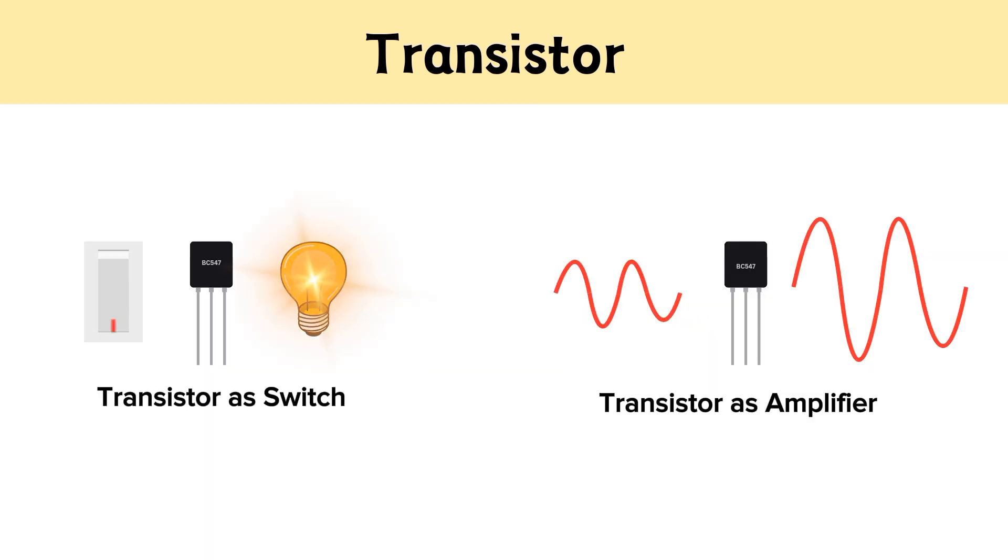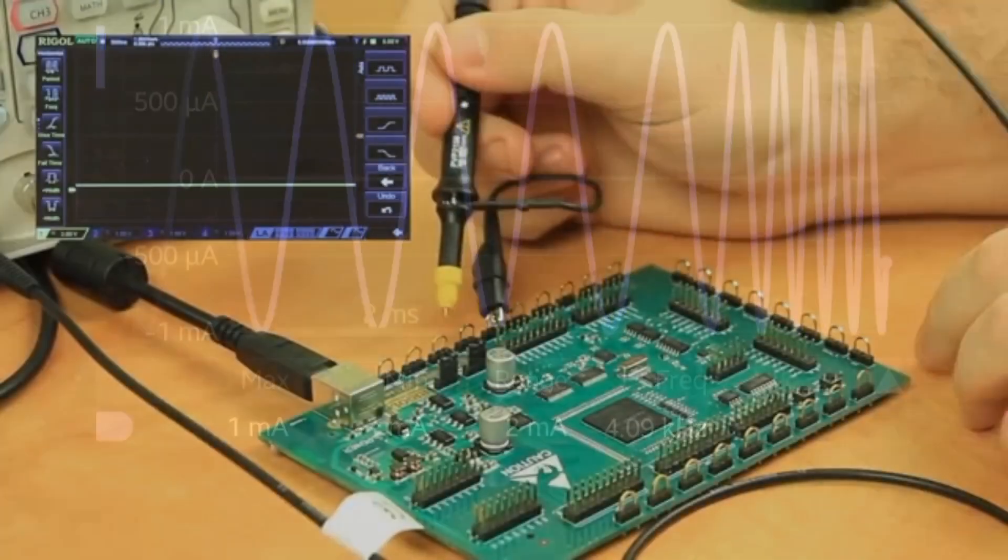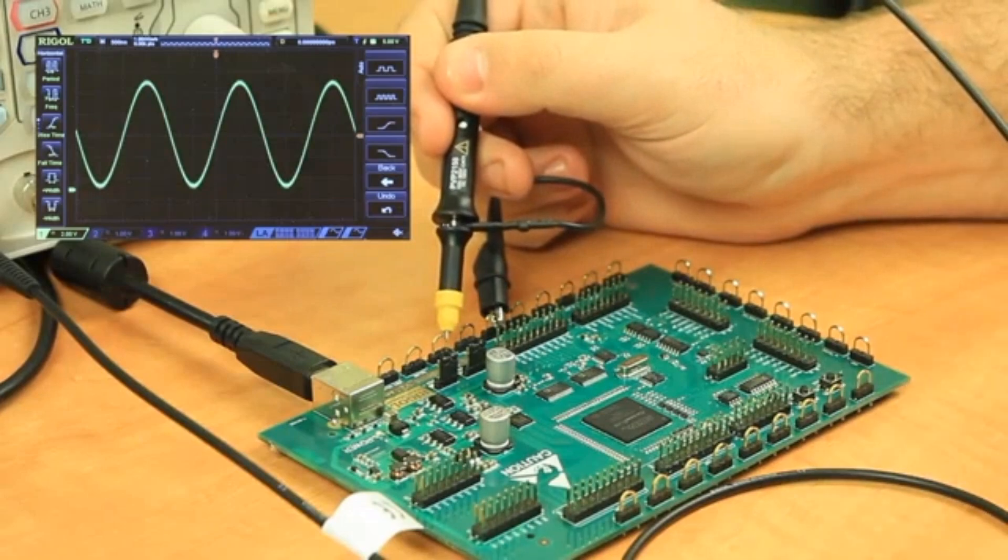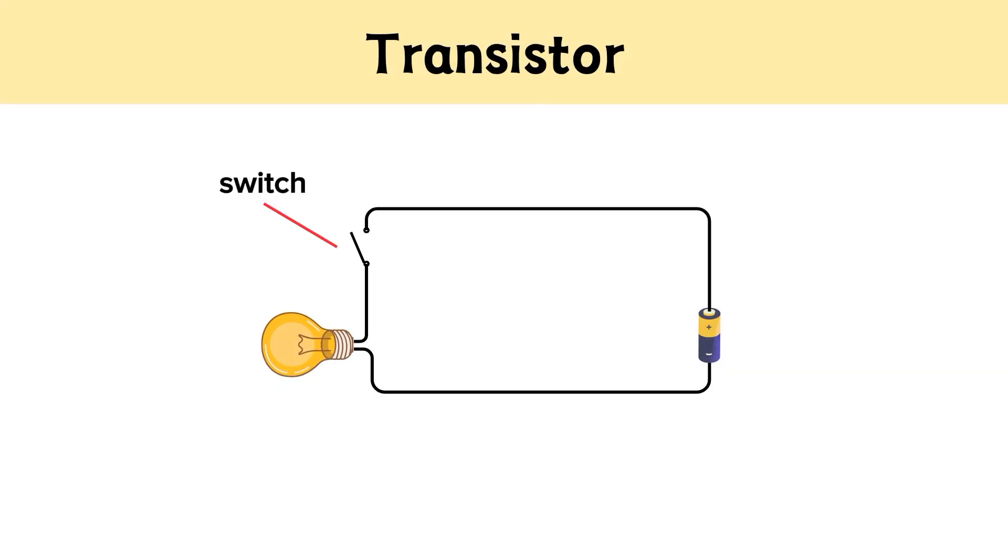Transistors can be used either as switches or amplifiers. They can switch at high frequencies, making them useful components in electronic circuits. A switch is used to turn electric devices on or off. Transistors can work as electronic switches.